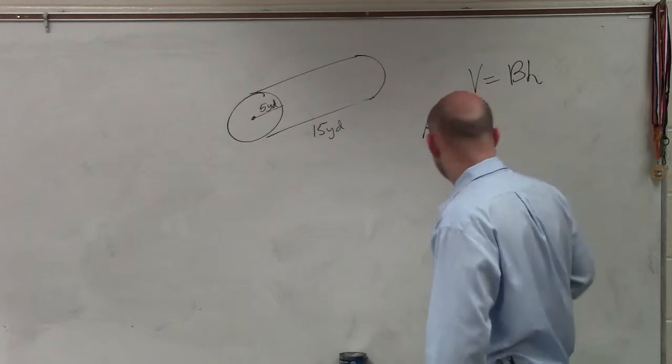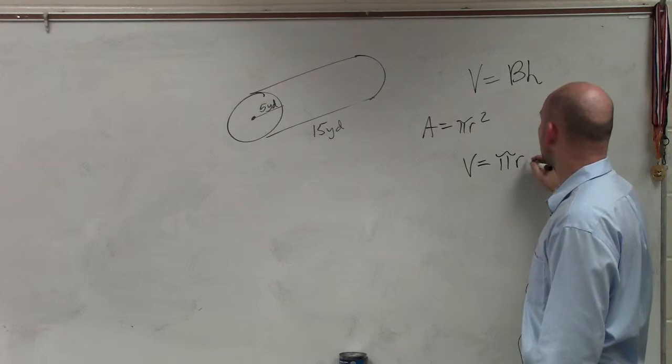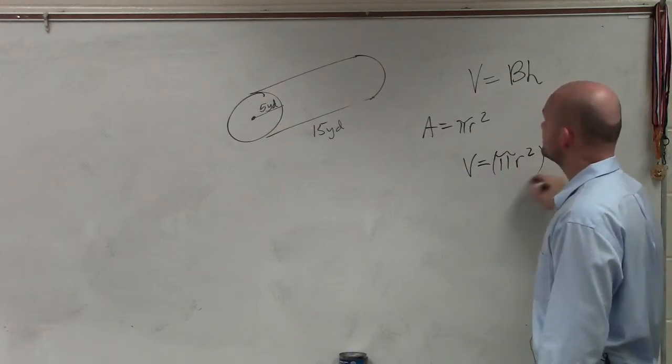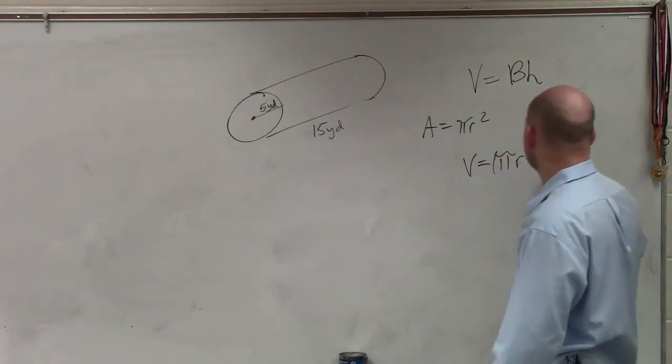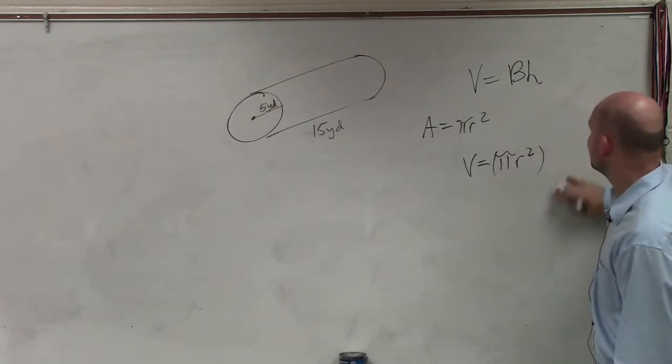So therefore, the volume is going to equal this area, which will be our area of our base, pi r squared, times our height, which would be 15, or times height.